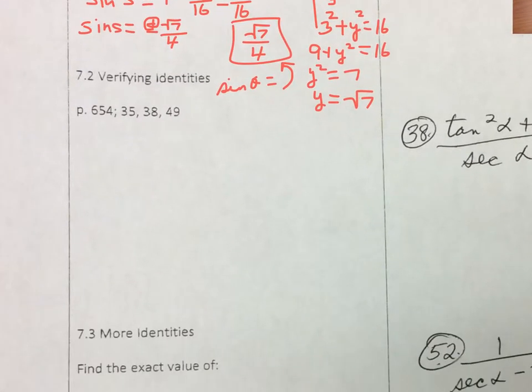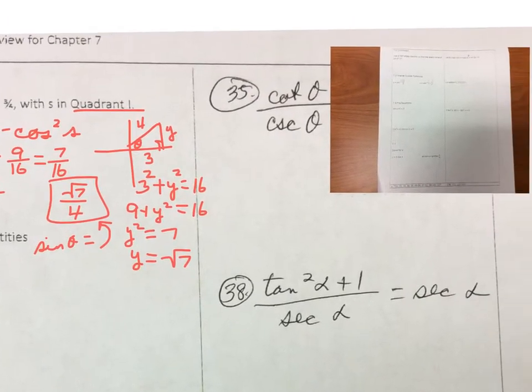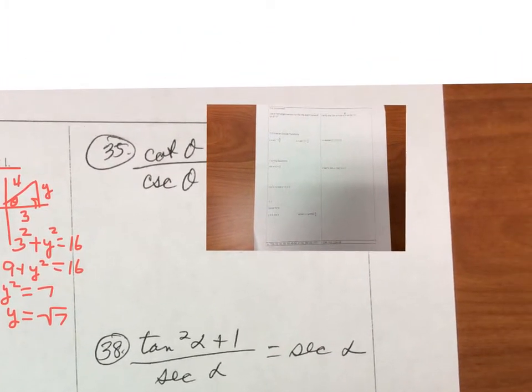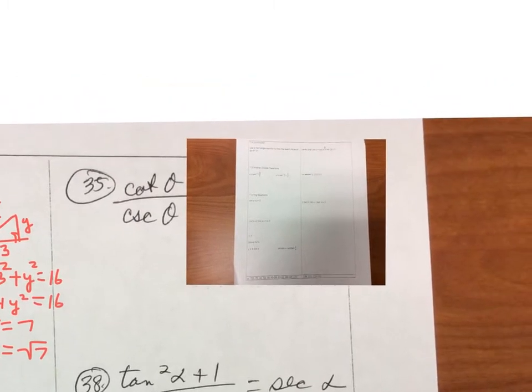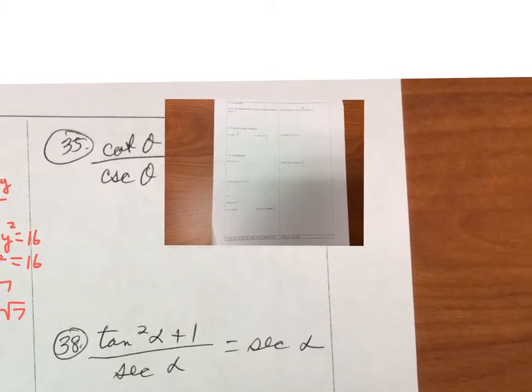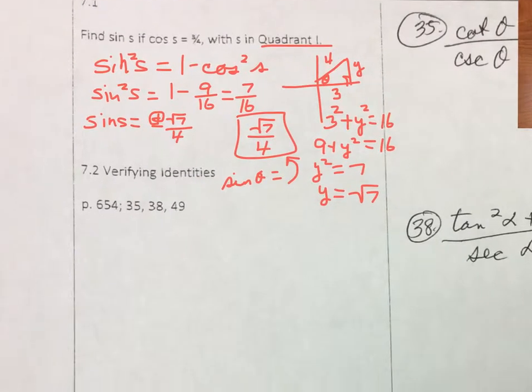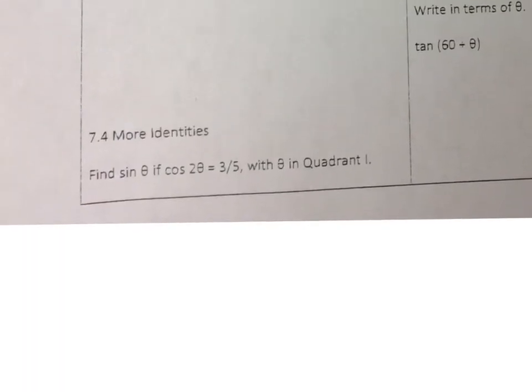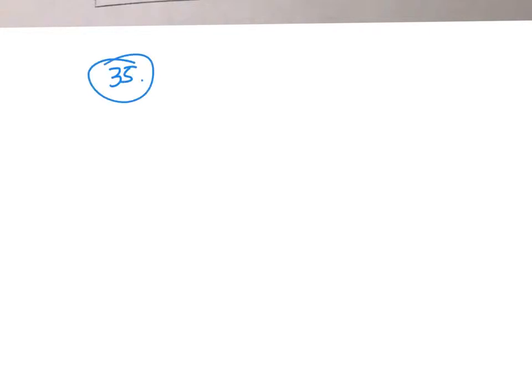In Section 2, we verified identities. I put three of them over here. I don't like what's going on there, so I'm just going to go down here and recopy those problems. Problem 35 says: cotangent theta over cosecant theta is equal to cosine theta. We're supposed to verify that.